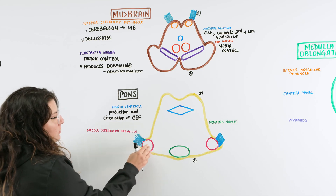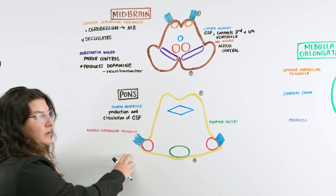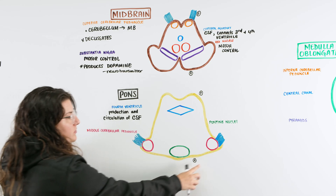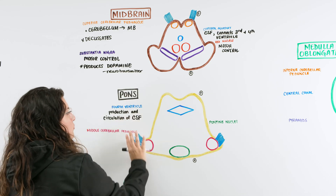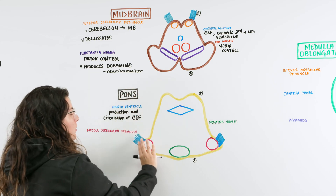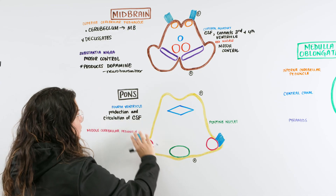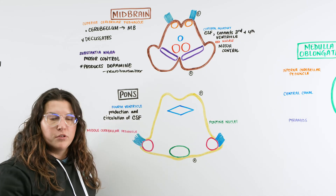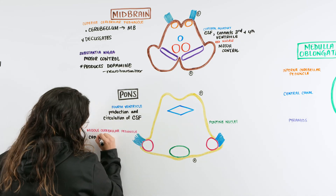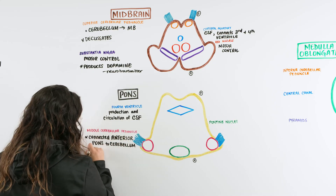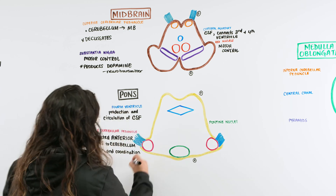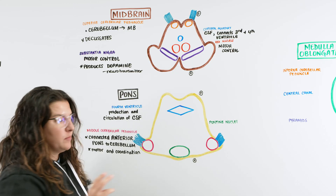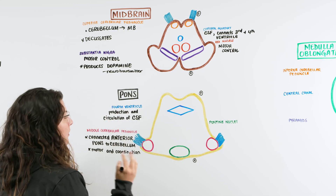Next we have the middle cerebellar peduncle. Remember that the pons's cerebellar peduncle is connected anteriorly, so it wraps back through to reach the cerebellum. Because it is connected anteriorly, it creates long pathways carrying messages from the pons into the cerebellum — these typically have to do with motor coordination and balance, helping the body maintain equal balance.